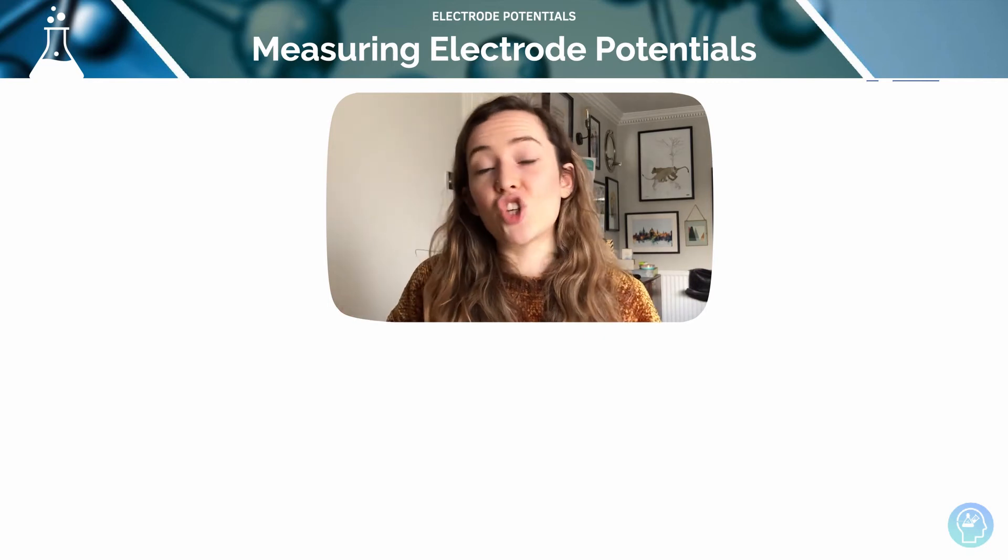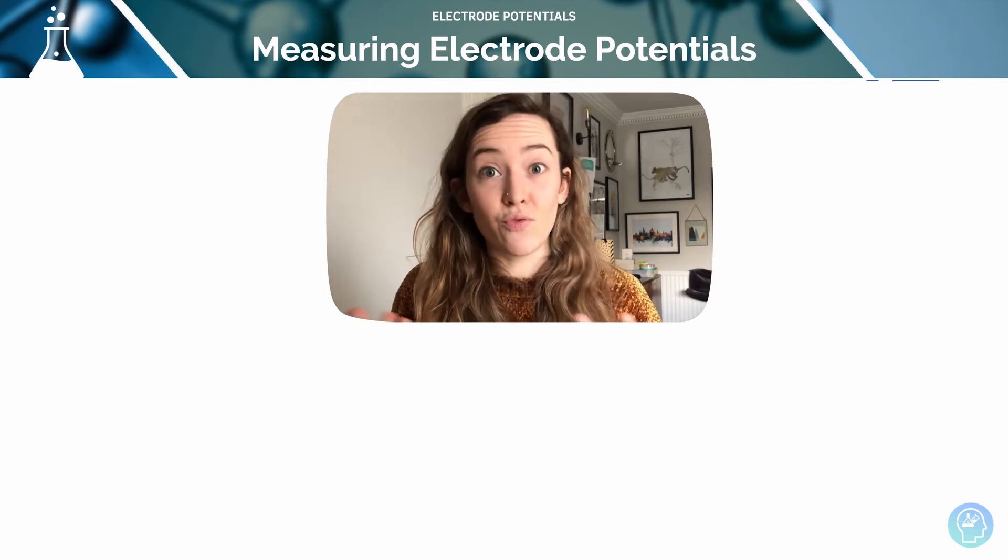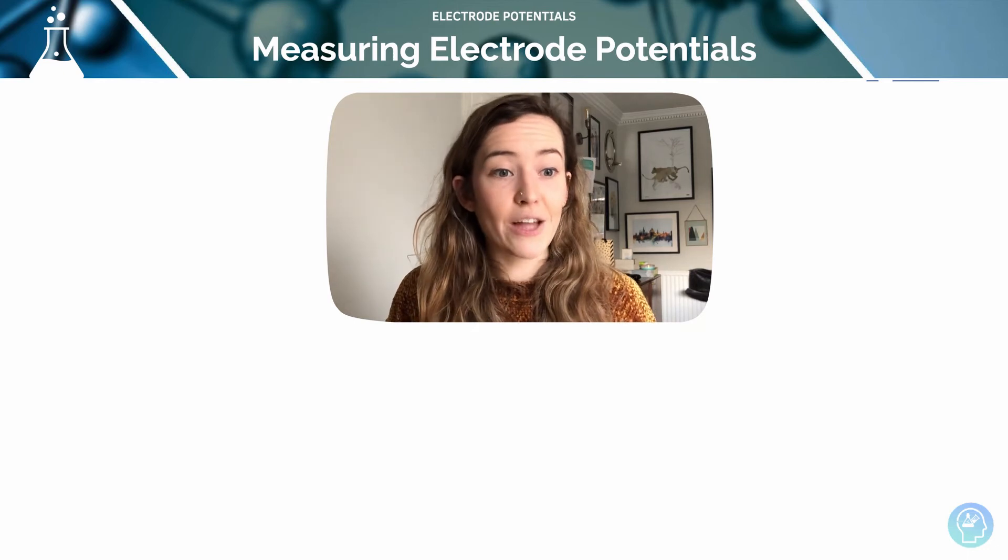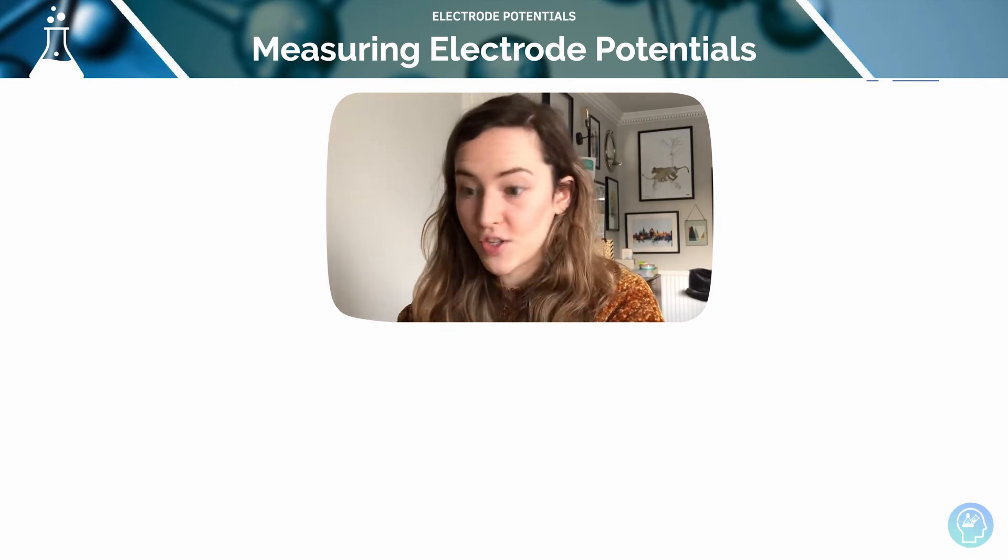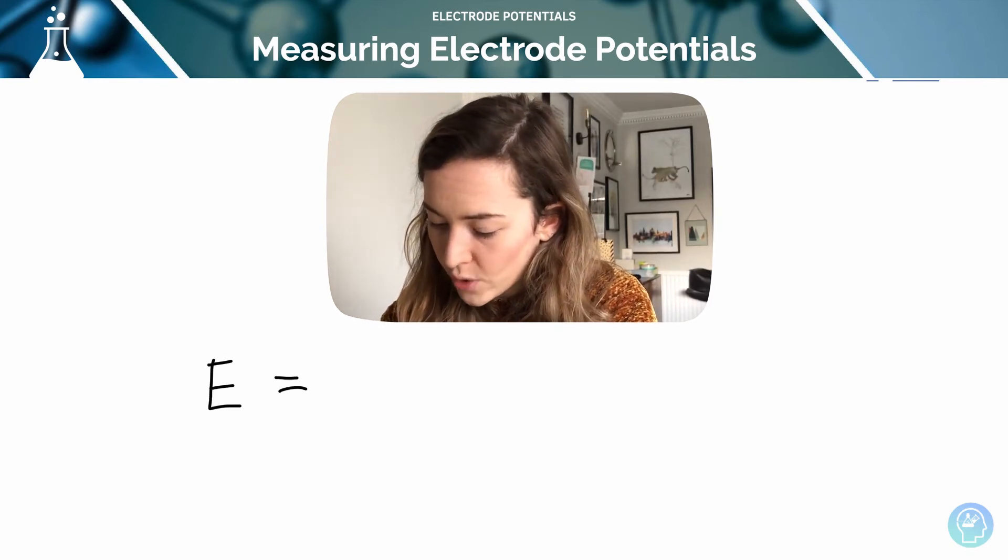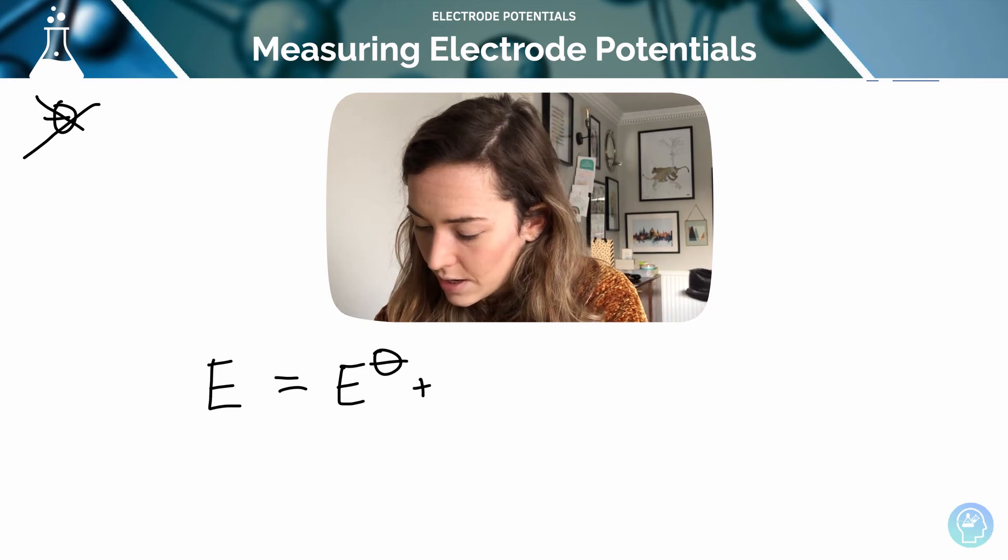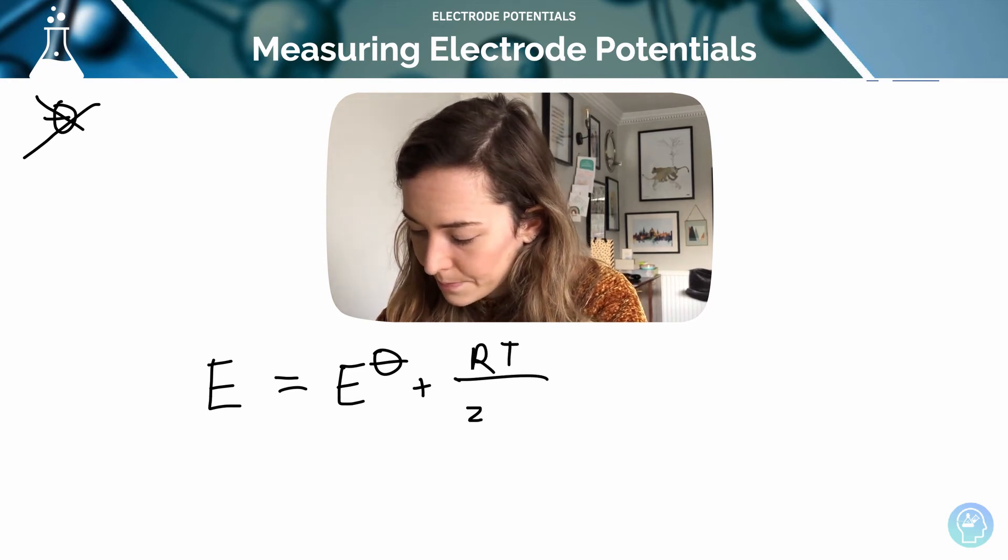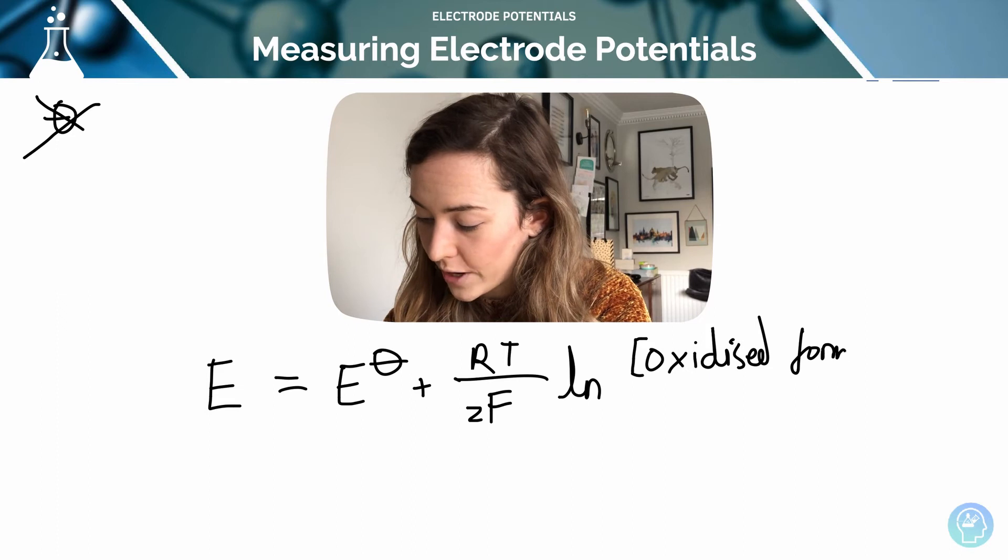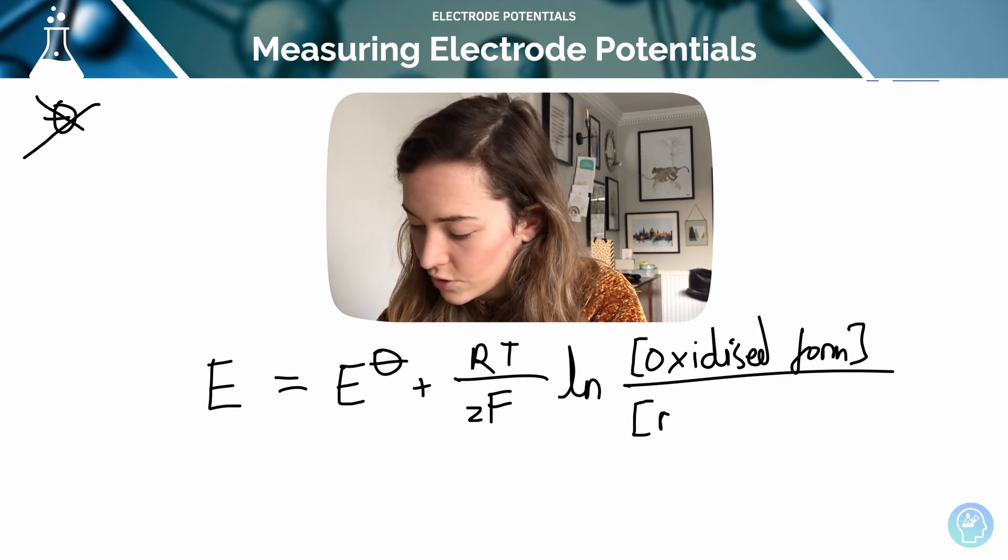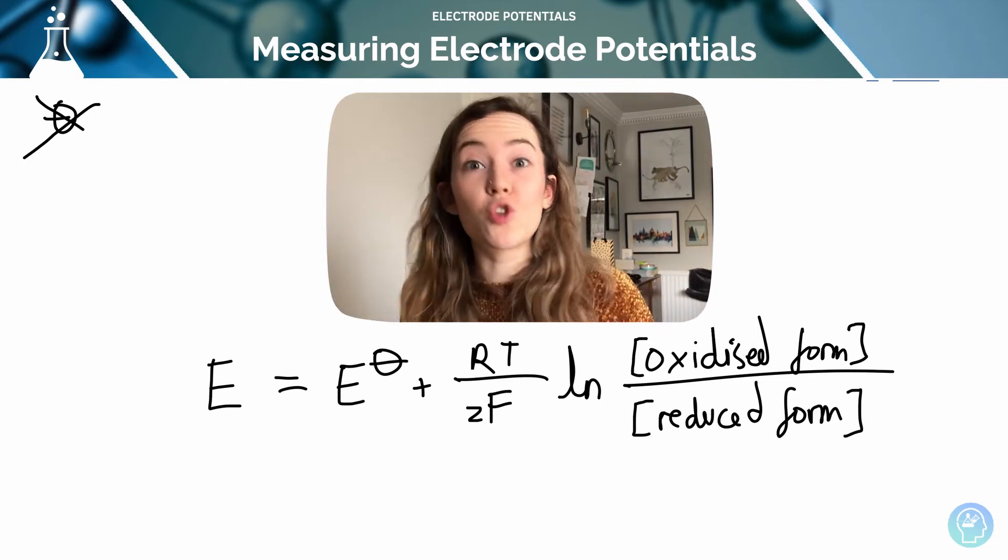In those cases that we've just discussed, if we change the temperature, the pressure, or the concentration, we're no longer under standard conditions. So it's really useful that we've got an equation that can help us work out the electrode potential of a half-cell when it's not standard conditions. We can use this using the Nernst equation. So my electrode potential—notice I don't have the theta symbol there because it's not standard anymore—is going to be my standard electrode potential plus RT over ZF ln the concentration of my oxidized form divided by my concentration of my reduced form. Now check your specification as to whether you need to learn this equation.